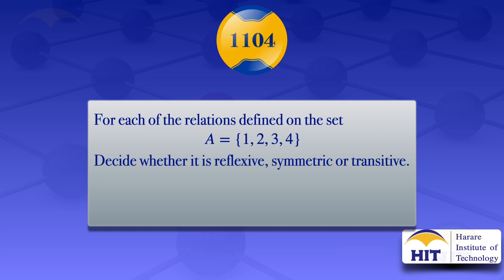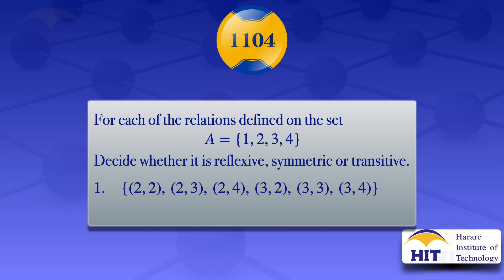The first relation I'm going to look at contains the ordered pairs: (2,2), (2,3), (2,4), (3,2), (3,3), and (3,4).